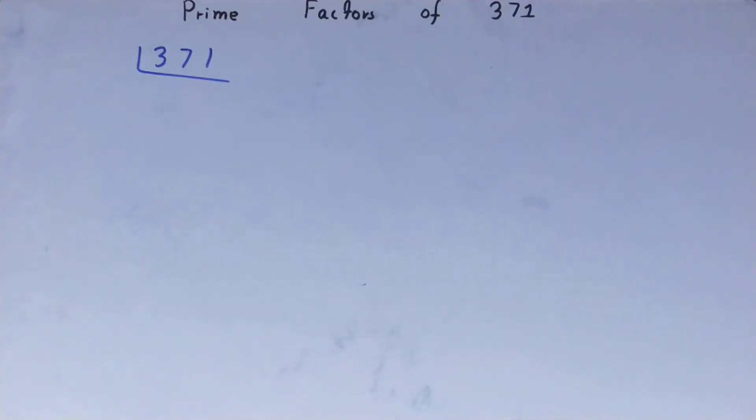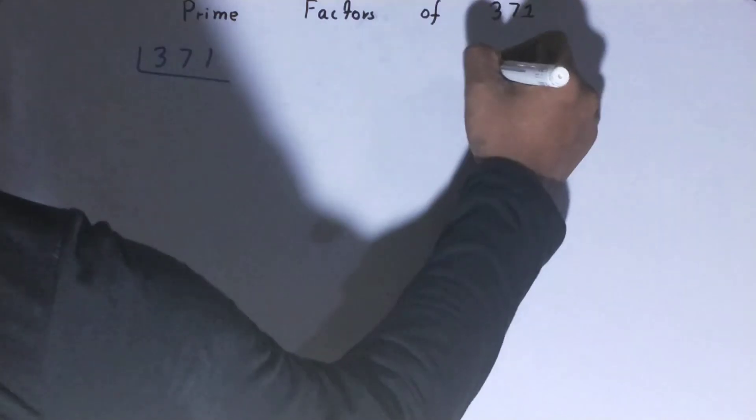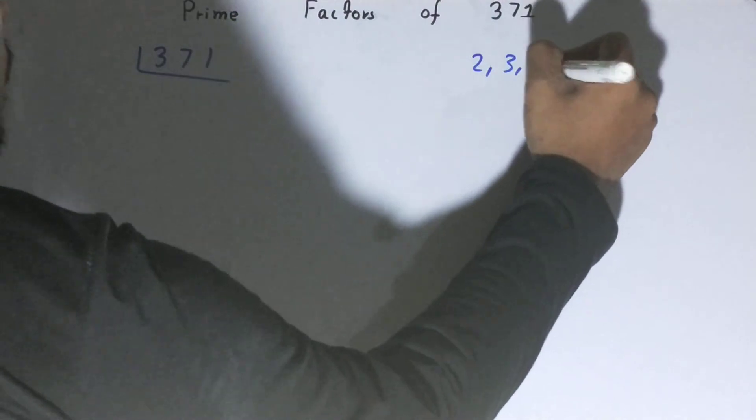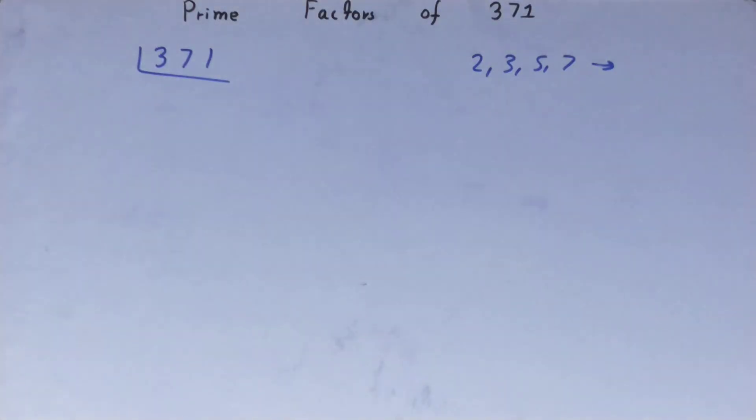Before solving this, you must have an idea about what prime numbers are. Prime numbers are numbers that are divisible by one and themselves only, like 2, 3, 5, 7, and so on. So what we'll do: